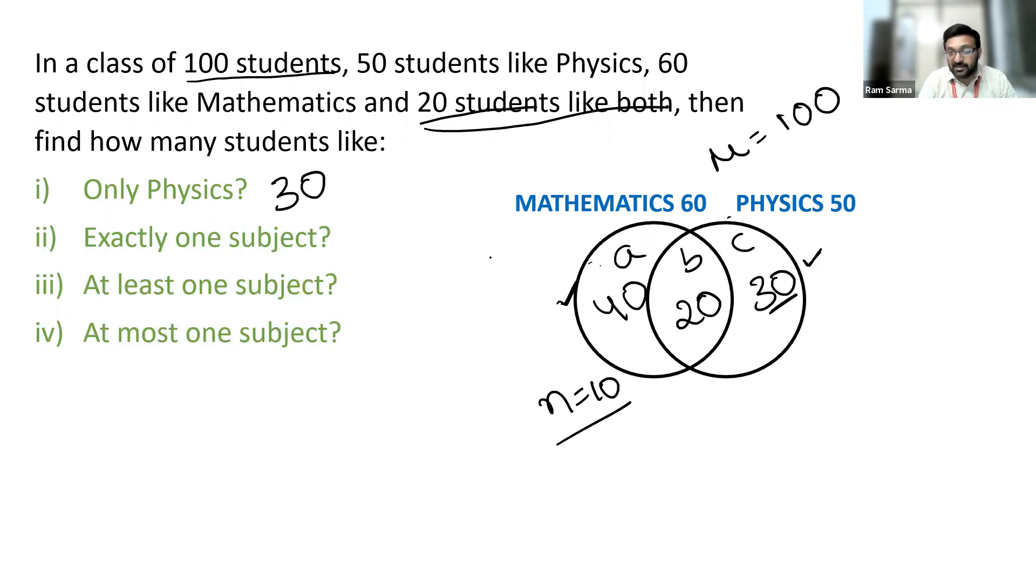How many students like exactly one subject? Here, 40 members like exactly one subject. That's math. Here, 30 members like exactly one subject. That's physics. So on a whole, there are 70 members who like exactly one subject.